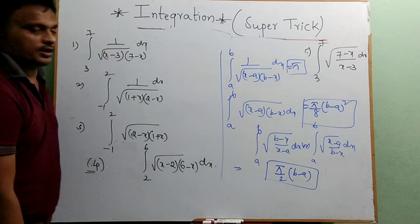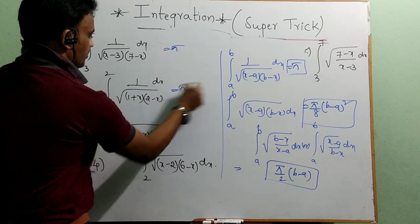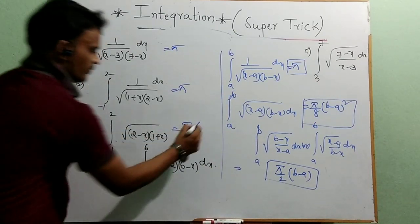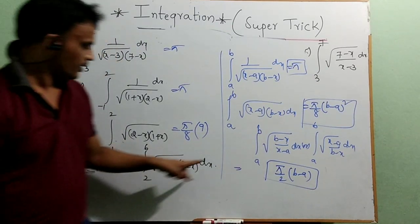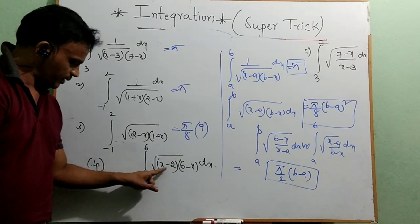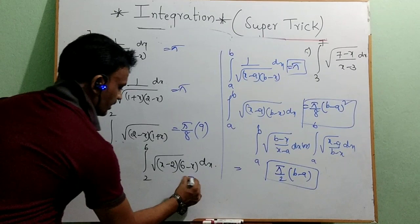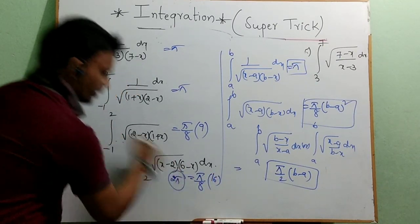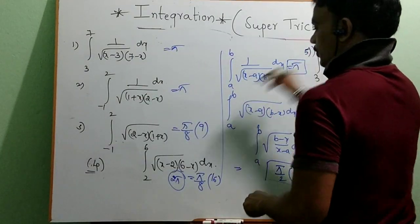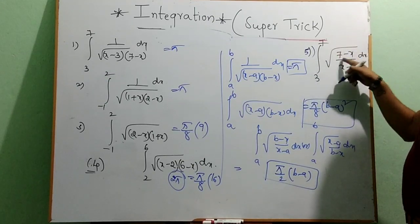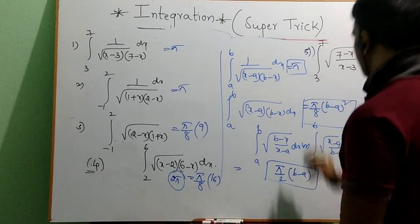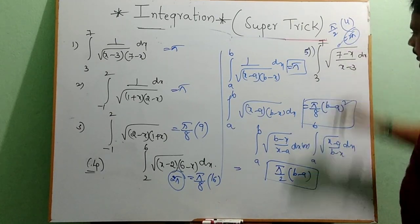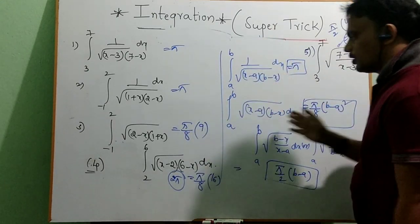Applying these: integral from 3 to 7 of 1/√((x−3)(7−x)) dx = π. For integral of √((x−a)(b−x)) with a=1, b=3, the answer is π/8·(3−1)² = π/8·4 = π/2. For a=4, b=6: π/8·(6−4)² = π/8·4 = 2π. And for integral from 3 to 7 of √((b−x)/(x−a)) dx = π/2·(7−3) = 2π.